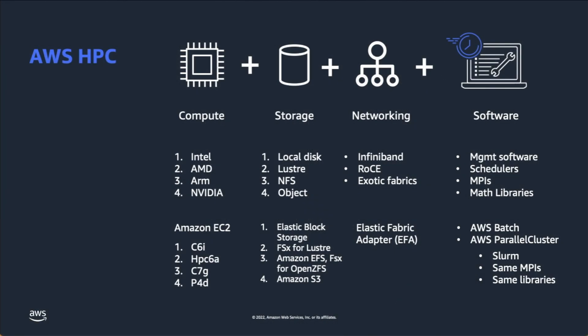When we move over to storage, local disk in our world is called Elastic Block Storage, as I mentioned earlier. Lustre for us is a thing called FSx for Lustre, or the file system service for Lustre. Amazon EFS offers really cool appliances for deploying NFS into your cluster environment and sharing it across multiple clusters if needed. And then of course Amazon S3 is our object store. We've got things that map onto all of these familiar concepts.